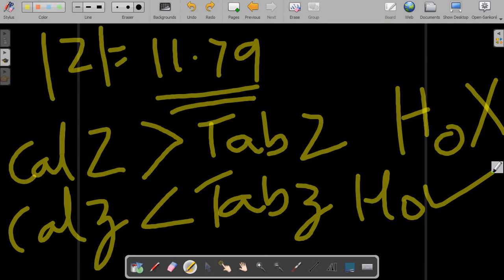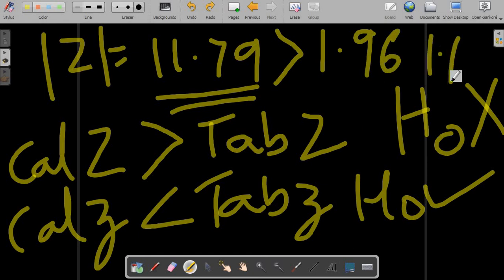In this case, our calculated z, that is 11.79, is greater than the tabulated 1.96. So H0 gets rejected. As far as our hypothesis testing is concerned, H0 gets rejected. I will try to explain you the logic.